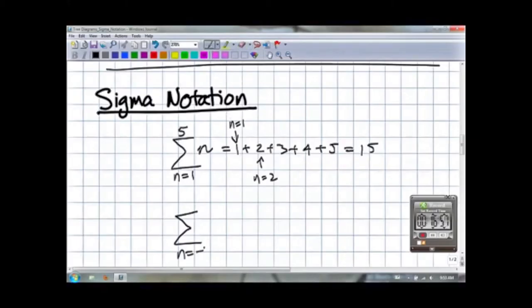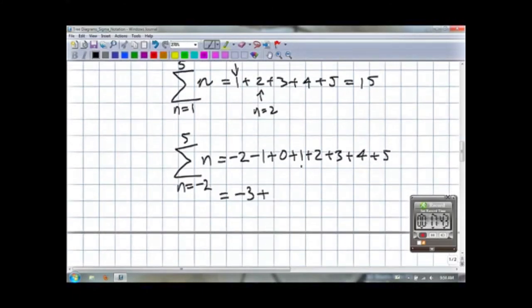Here's another example. Now, the upper and lower limits of the sigma notation need not start from any standard number or end up at any standard number. For example, we can start from negative 2 and go up to 5 for ending up with 7 terms.